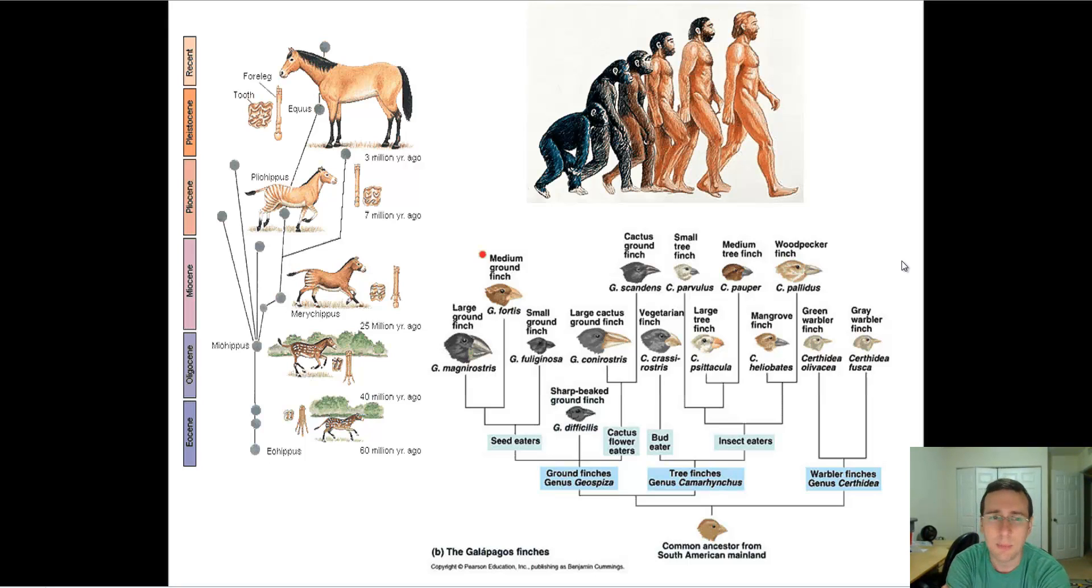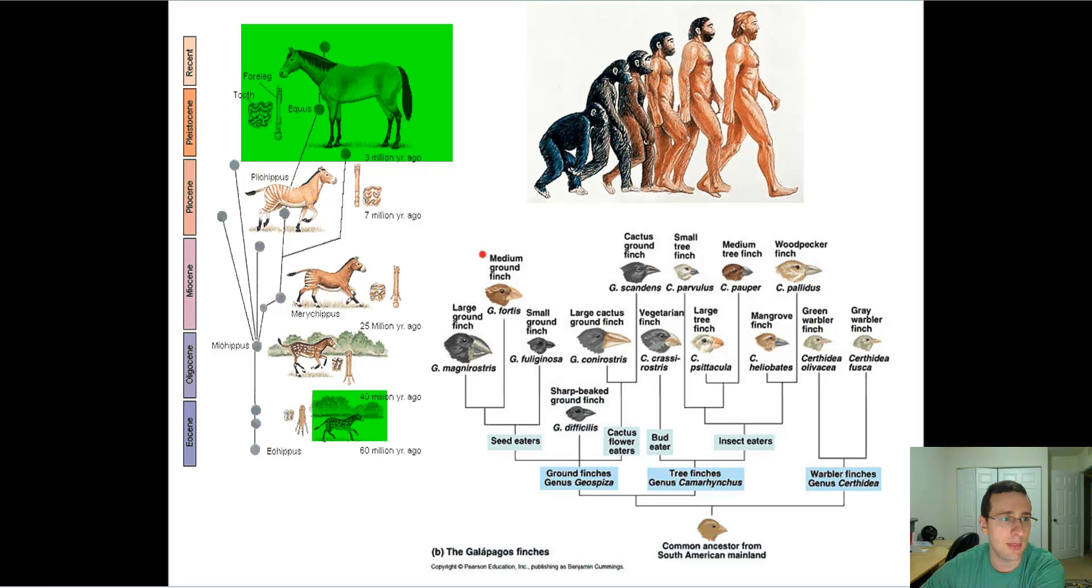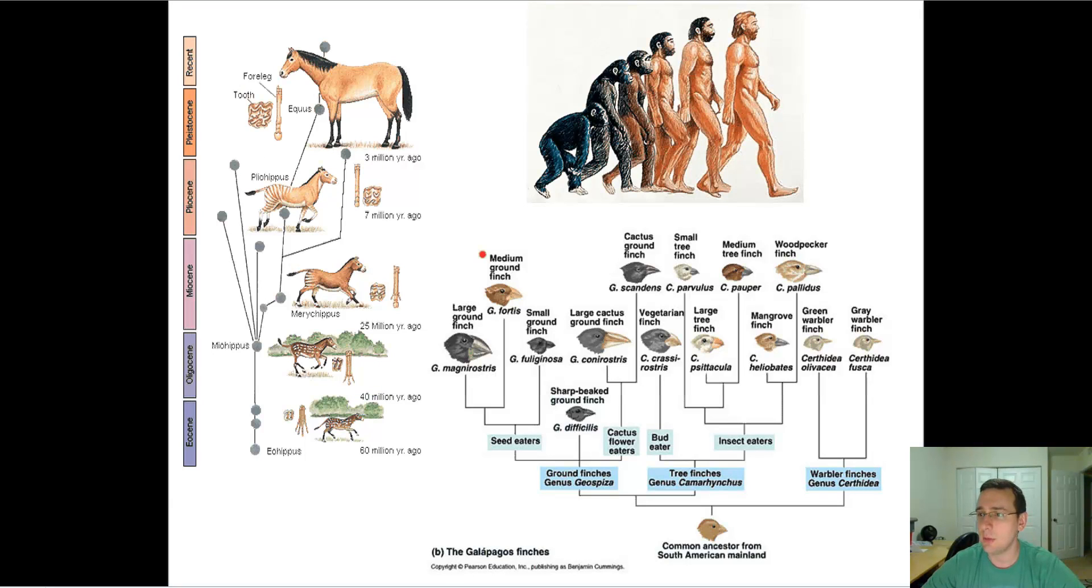It took a long time and a period where many of these branches did not survive. What looks to be a continuous process by which this horse became that horse, it actually was a very long process by which several other branches that could have made it never did.